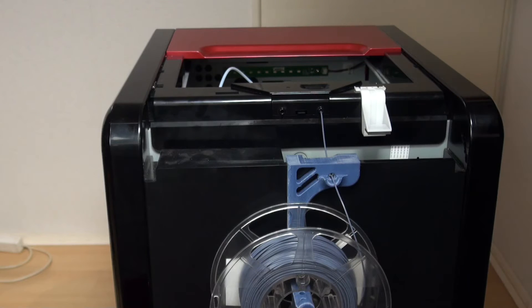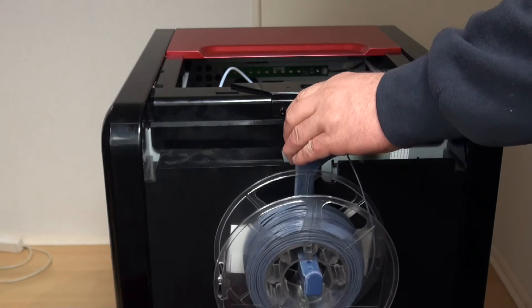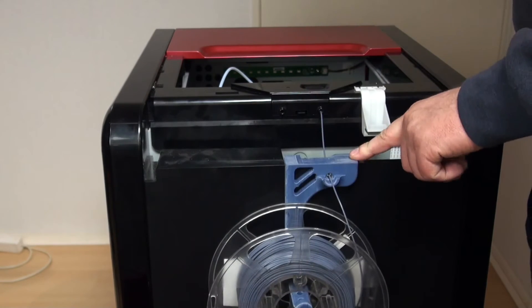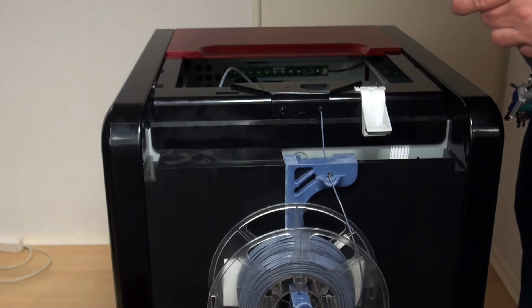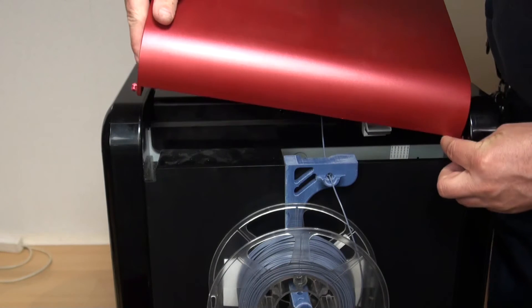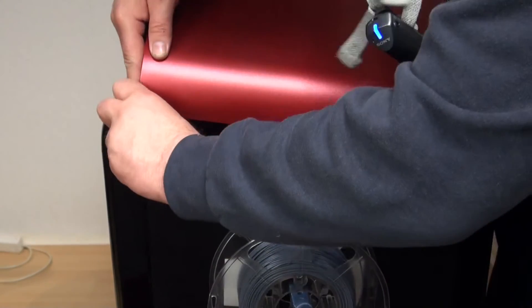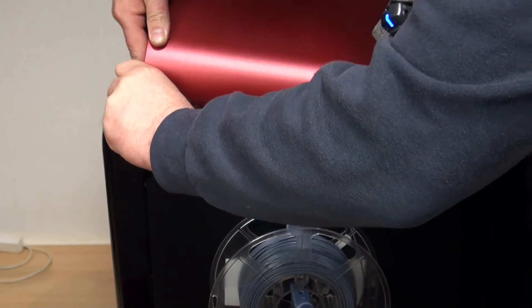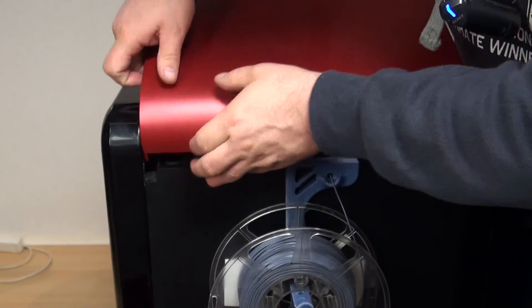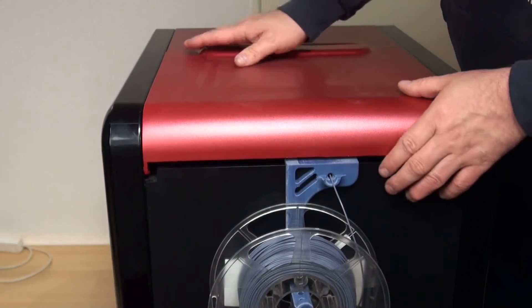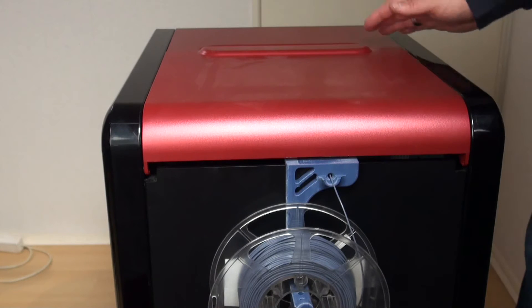I have the top lid removed so I can easily catch the filament holder and put it in place. Then when you place the top cover you just bring it in place like this and here it is. So now the machine is fully closed.